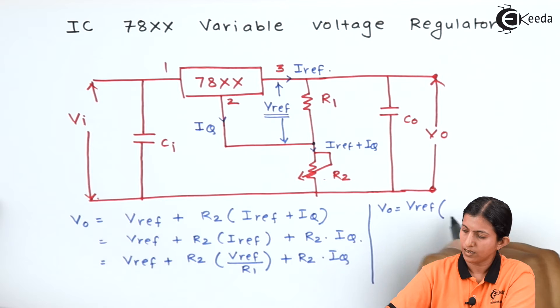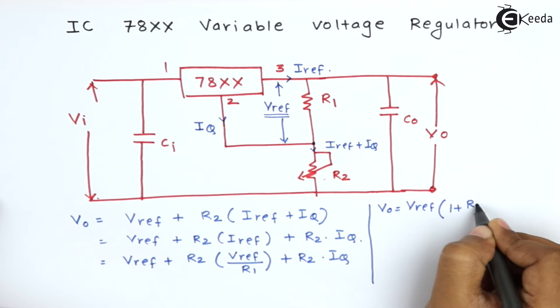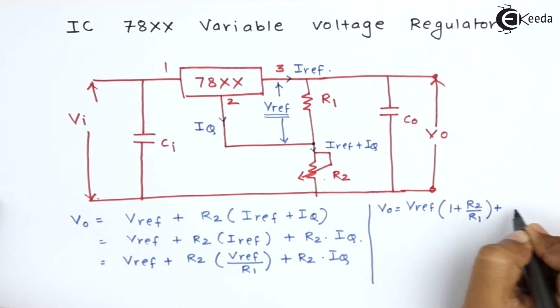V reference times 1 plus R2 divided by R1 plus R2 into Iq.